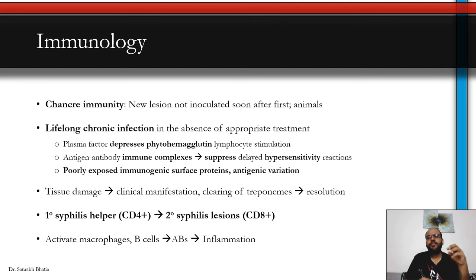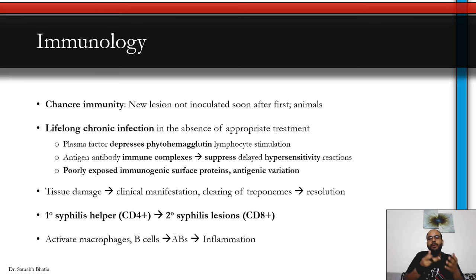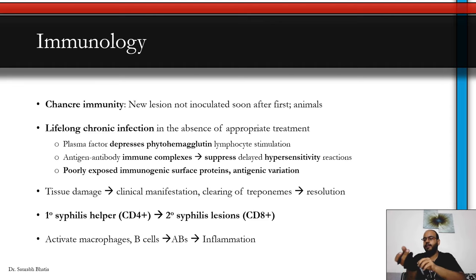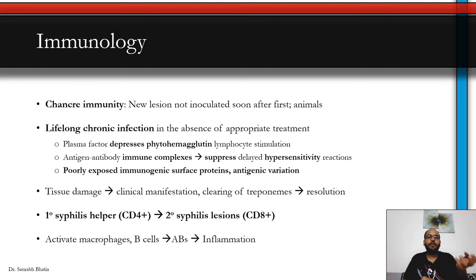Now let's discuss immunology. The immune-mediated damage is responsible for the protean manifestations in syphilis — for example, the secondary syphilis rash, the lymphadenopathy, and the chancre ulcer are all due to immune-mediated damage at the mucosal level. One important aspect is chancre immunity: a new lesion cannot easily develop soon after the first chancre heals. This was mostly seen in animal studies; in human studies it was not predominantly observed, and there are reports of two primary chancres occurring simultaneously.